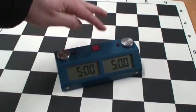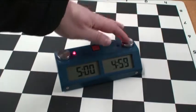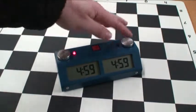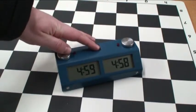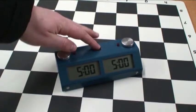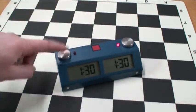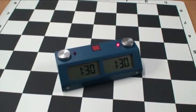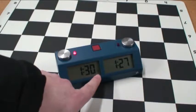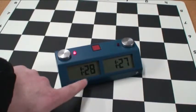Turning the clock off and back on, there's our 5-minute game. Accessing the third mode is a game in 1 minute and 30 seconds with a 3-second delay. Notice how the delay is indicated right here before the main time starts counting down.